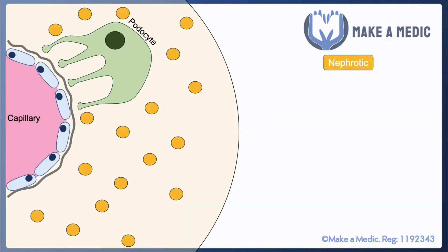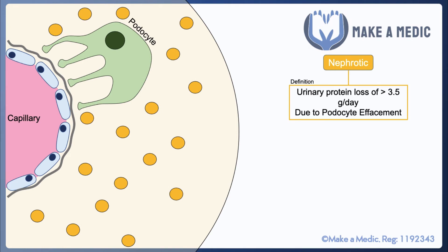Nephrotic syndrome is defined quite specifically as a urinary protein loss of more than 3.5 grams per day. More recently, 24-hour urine protein collections don't tend to be done quite as much, and measures such as a protein creatinine ratio or an albumin creatinine ratio may be used to define nephrotic syndrome.